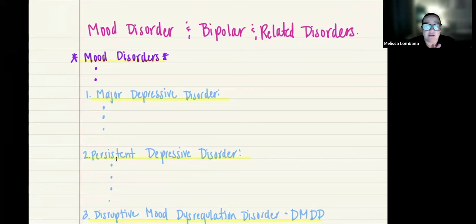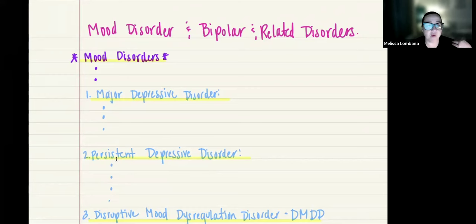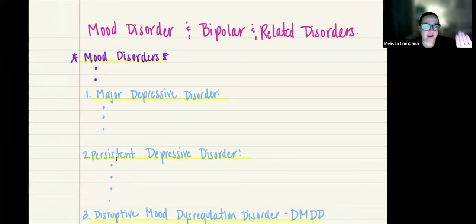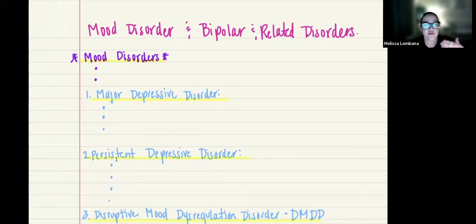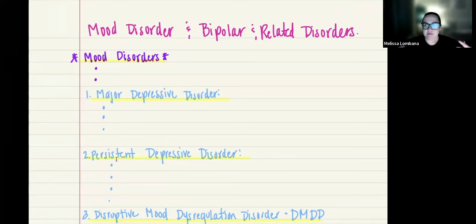These symptoms need to last for two or more weeks, and the person needs to have five or more of those symptoms. One of those symptoms must include either depressed mood or loss of interest or pleasure. This is really important to know because depression is a term that gets thrown around a lot. The DSM-5 requires more symptoms to be present before a diagnosis can be made.